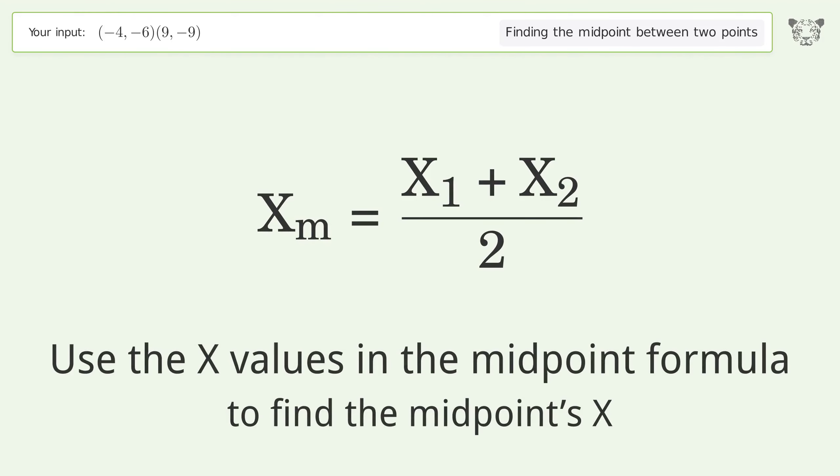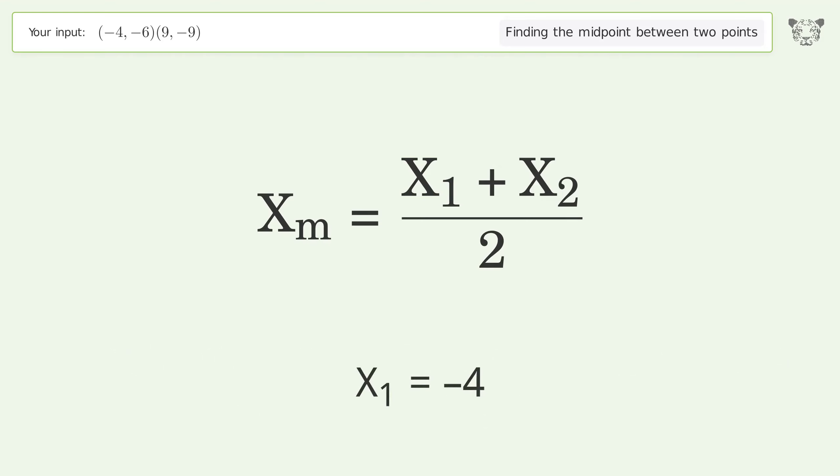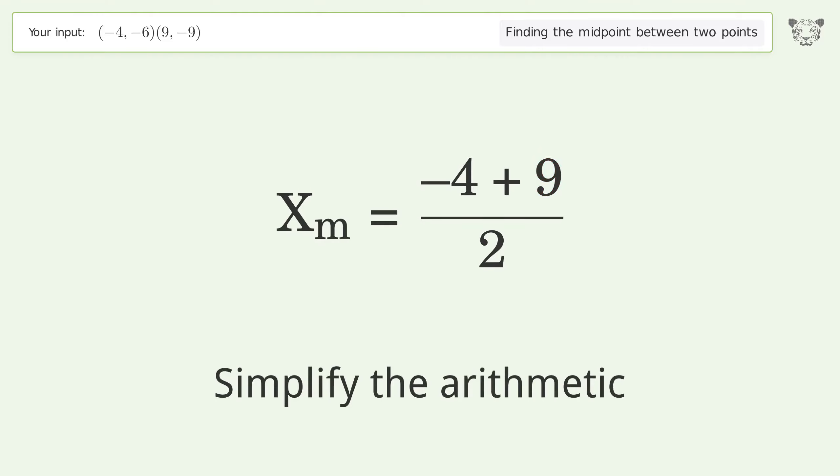Use the x values in the midpoint formula to find the midpoint's x. x1 = -4, x2 = 9. Simplify the arithmetic.